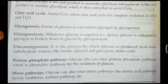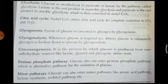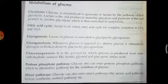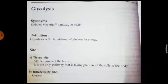The next pathway is the pentose phosphate pathway, also called PPP. Glucose can also enter the pentose phosphate pathway, which is an alternative pathway for oxidation of glucose. The main pathway is glycolysis; the pentose phosphate pathway is an alternative where glucose is converted to pentose sugars like ribulose and ribose — five-carbon compounds, hence the name pentose phosphate pathway. Minor pathways include the uronic acid pathway, lactose synthesis pathway, and sorbitol pathway.